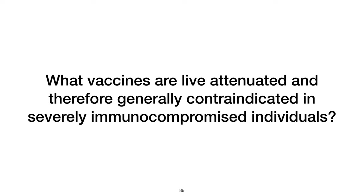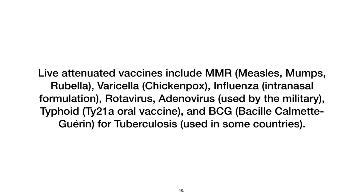What vaccines are live attenuated and therefore generally contraindicated in severely immunocompromised individuals? Live attenuated vaccines include MMR (measles, mumps, rubella), varicella (chickenpox), influenza intranasal formulation, rotavirus, adenovirus (used by the military), typhoid TY21A oral vaccine, and BCG (Bacille Calmette-Guérin) for tuberculosis used in some countries.